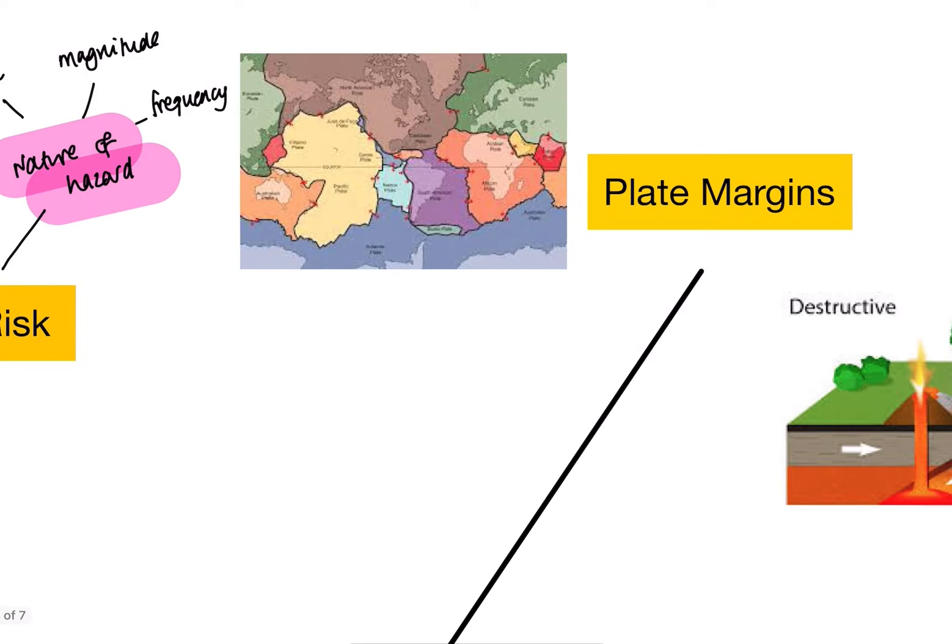If we start by thinking about our tectonic plates, this map here illustrates to us that we know that slabs of the earth's crust are floating on top of the mantle. Those are what we're calling our tectonic plates. We have two different types of crust. Our first type of crust would be our continental. Our second type of crust would be our oceanic. With our continental crust, it's typically thicker and less dense.